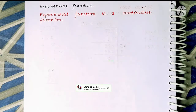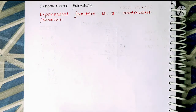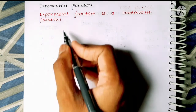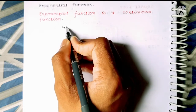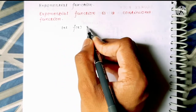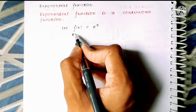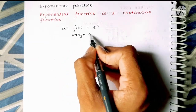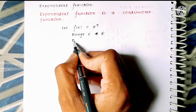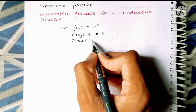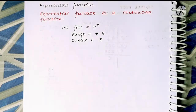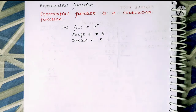Let's start. First of all, we will take f(x) = e to the power x, that is the exponential function. The range of the exponential function belongs to all real numbers, and the domain of the exponential function is also all real numbers.